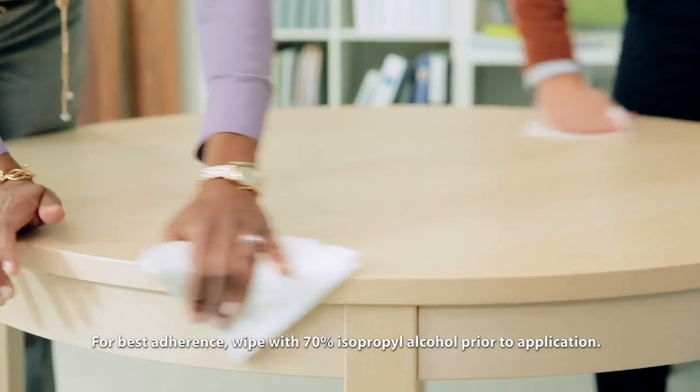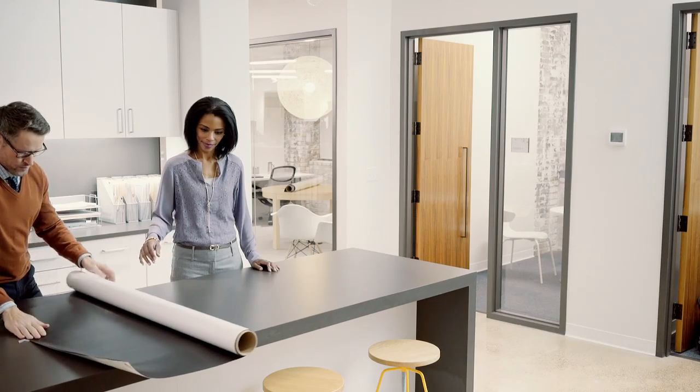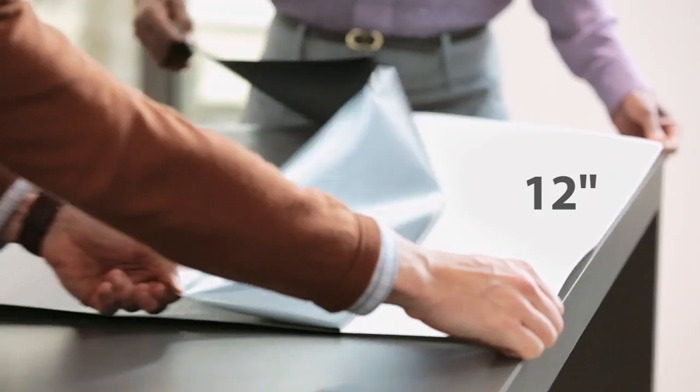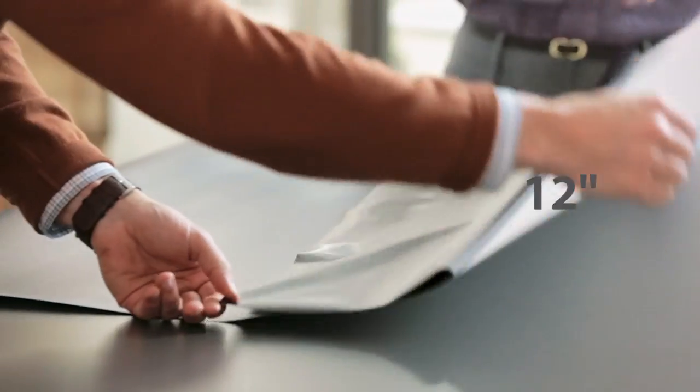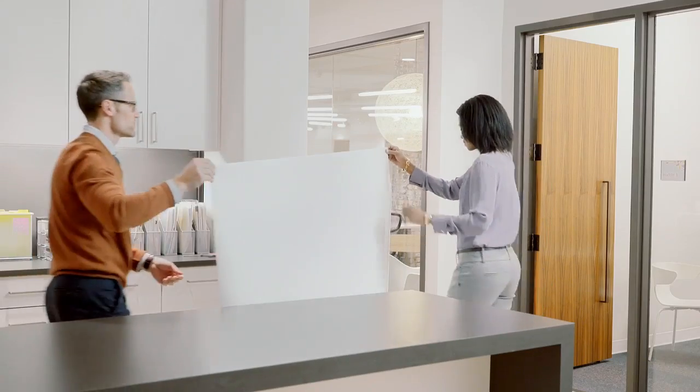Get started by cleaning and drying the area, removing any residue. Then, unroll the Post-It dry erase surface on a flat, clean area and peel back 12 inches of the black liner from the top edge.